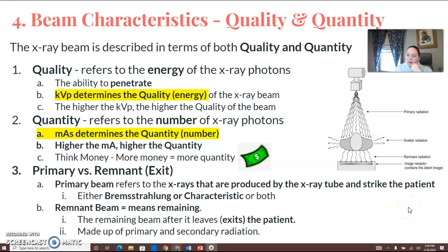All right, number four is beam characteristics in regards to quality versus quantity of the x-ray beam. It can be described as quality and quantity.